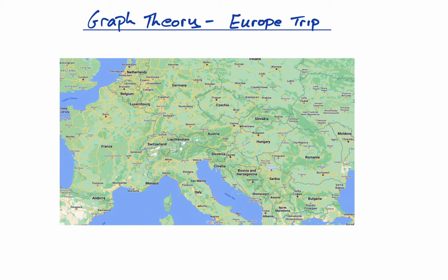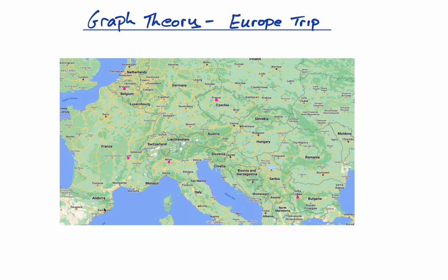I'm going to start in Lyon — that's where my wife is from and we're there in the summer. Then I need to decide which cities to go to. I like AC Milan, so I'm definitely going to Milan. I've also been to Sofia and liked it, so I'll go to Sofia, Prague, maybe Brussels, and I definitely want to go to Barcelona. So these are the cities I'm going to visit.